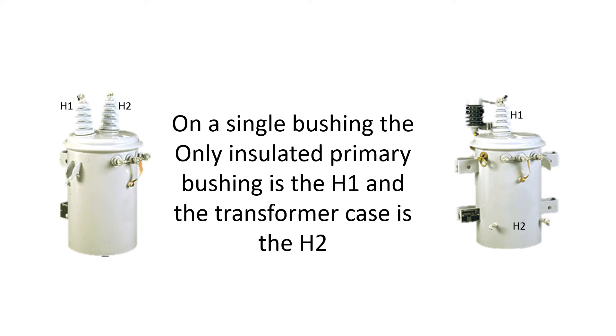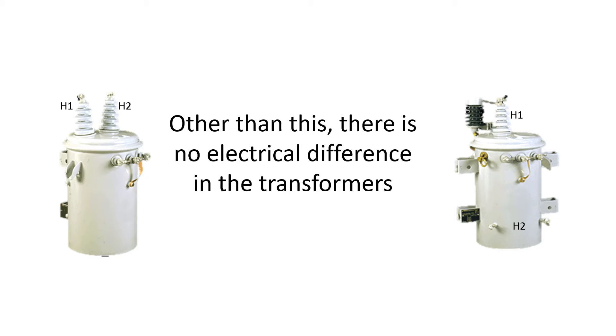On the two bushing transformer, it's just the primary bushing. You can actually use either one of those primary bushings to connect to the primary, and the other one then goes to the system neutral. So you can feed the H1 or you can feed the H2. Either way, the other one would then go to the system neutral and work fine. So whatever is convenient when you're making the connection.